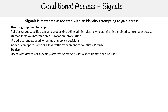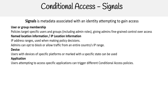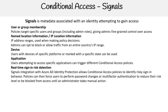For devices, users with devices of specific platforms or marked with a specific state can be used. For applications, users attempting to access specific applications can trigger different conditional access policies. For real-time sign-in risk detection, signals integration with Azure AD Identity Protection allows conditional access policies to identify sign-in behavior. Policies can then force users to perform password changes or multi-factor authentication to reduce the risk level, or be blocked from access until an administrator takes manual action.